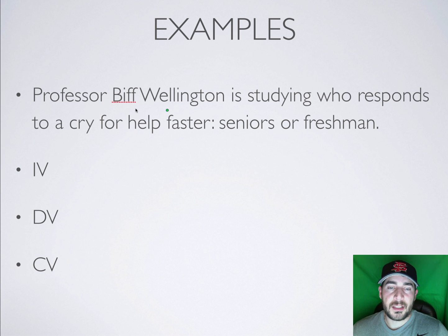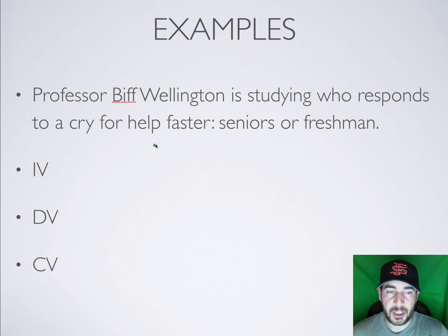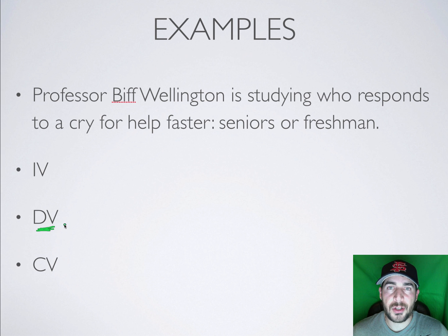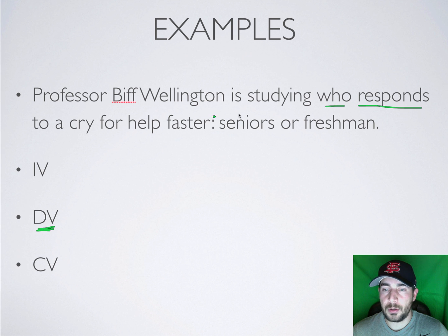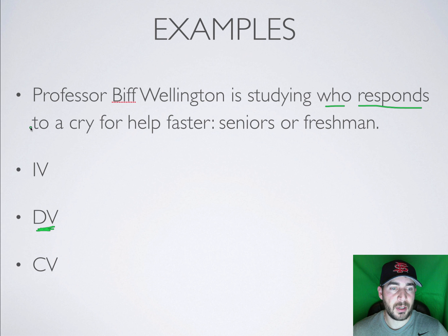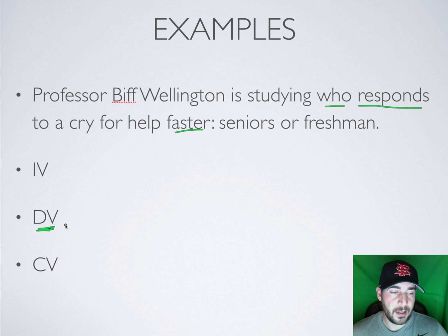Professor Biff Wellington is studying who responds to a cry for help faster: seniors or freshmen. What are we measuring here? First thing we look for is the dependent variable — what is being measured? We're measuring who responds faster, so the quickness of response is going to be your dependent variable.